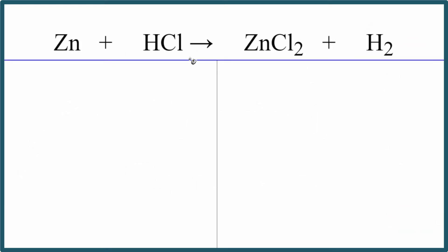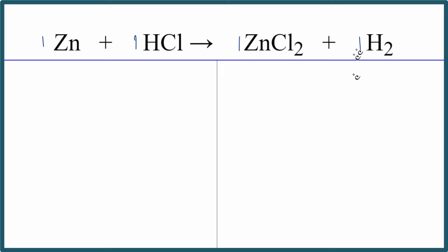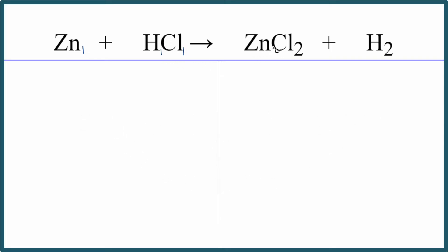When balancing equations, one prime rule is that we can change the numbers in front called the coefficients — right now if nothing is written that means there's a one in front. What we can't change are the numbers written afterwards, called subscripts. If nothing is written we assume it to be a one, but we can never change the subscripts when balancing equations.